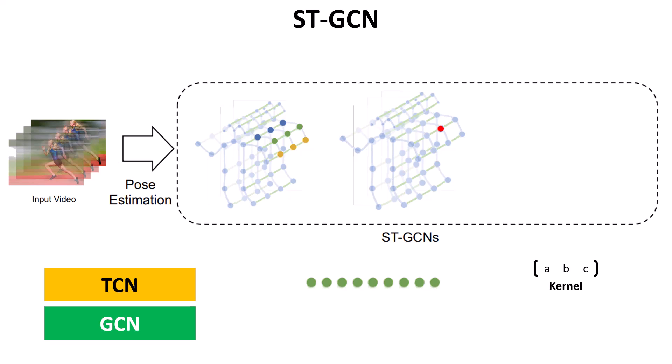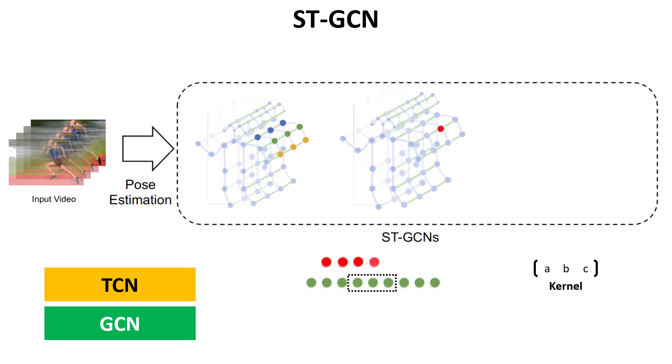Exactly like CNN, we define a window — say a size-three window — and multiply the first frame's value by A, the second by B, and the third by C, then sum them and place the result at the center location in the output feature map. We convolve this window across all frames to produce different outputs. The elbow in the first and last frames may be missing information, but we handle this the same way as in CNNs by adding padding at the first and last frames.